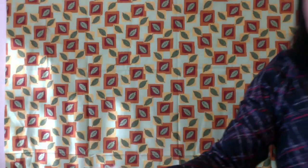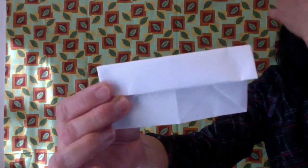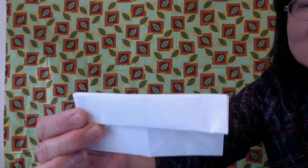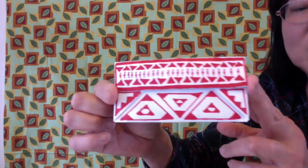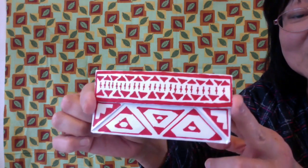So here is the paper wallet. You can decorate this with crayons, color pencils, markers, whatever you have in your house. And I use the red marker to put the geometric designs on here.